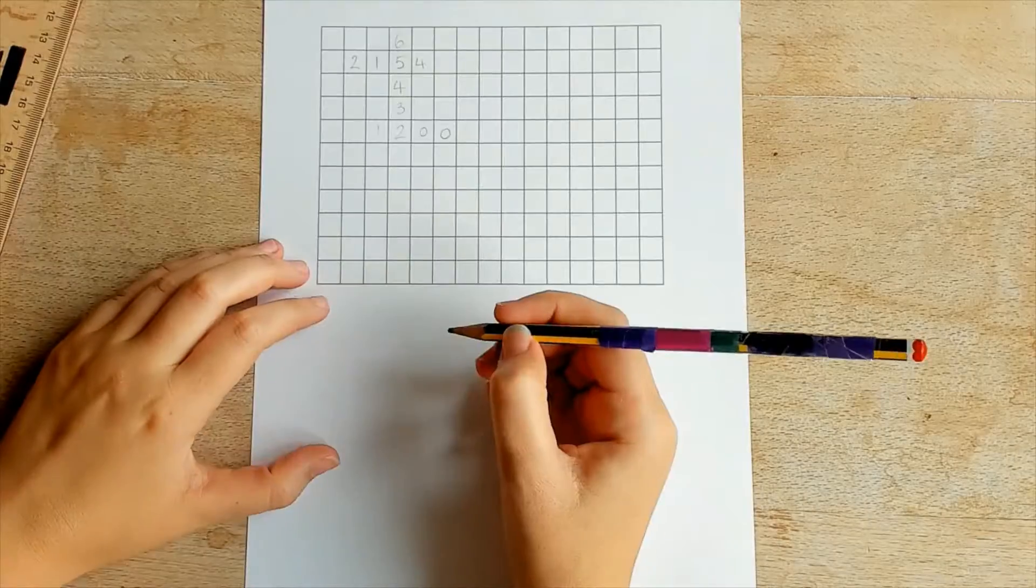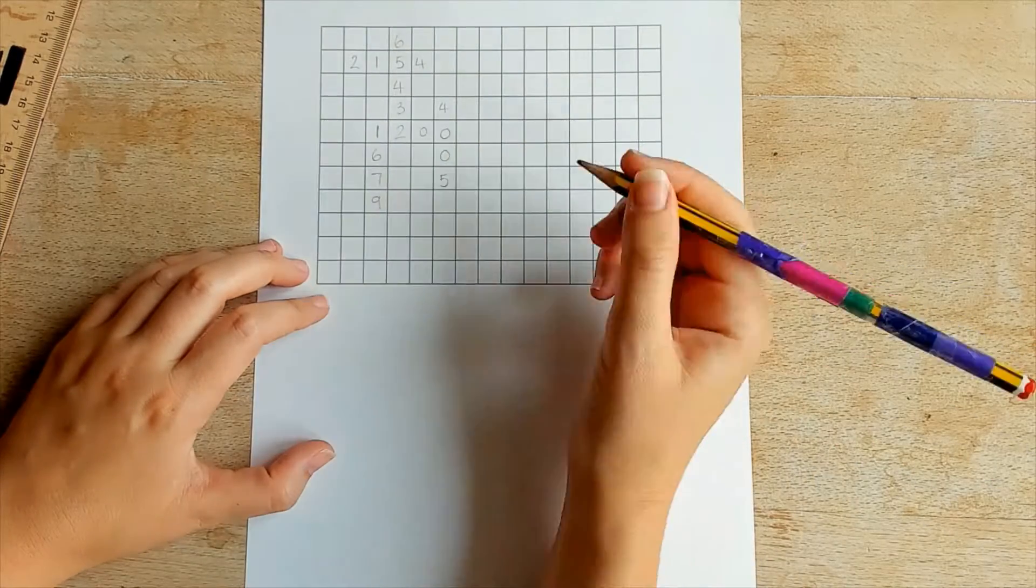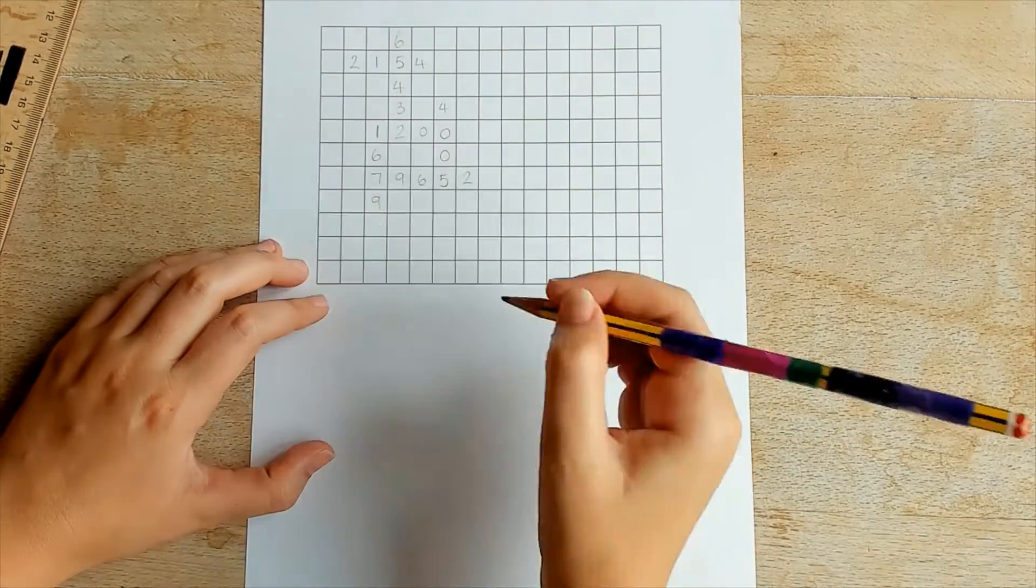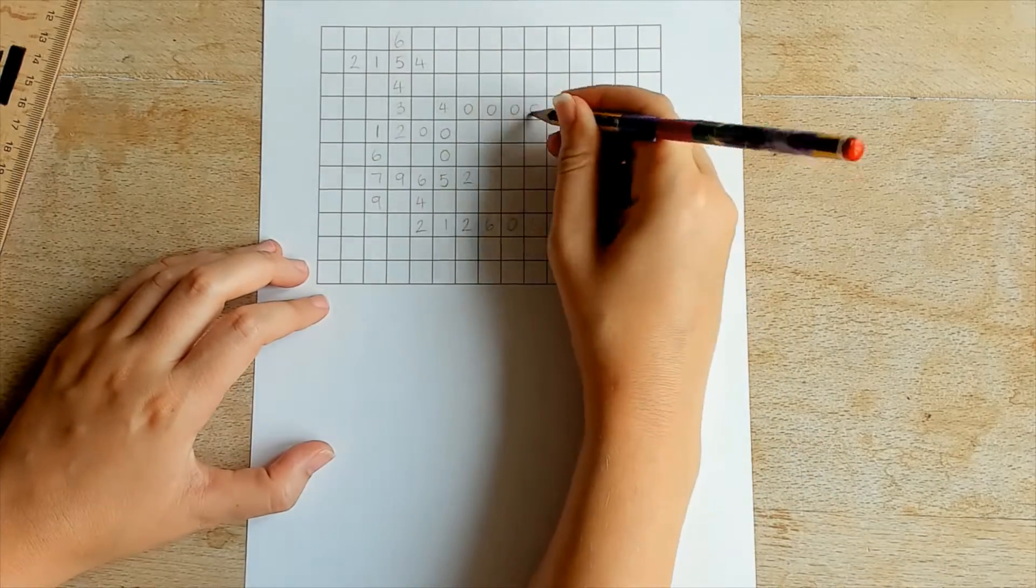To extend, why not ask your children to create a cross number puzzle of their own. Start by adding the numbers to the puzzle grid. This should be done very lightly in pencil as they will eventually be rubbed out. Learners can make this as crowded or spaced out as they like.